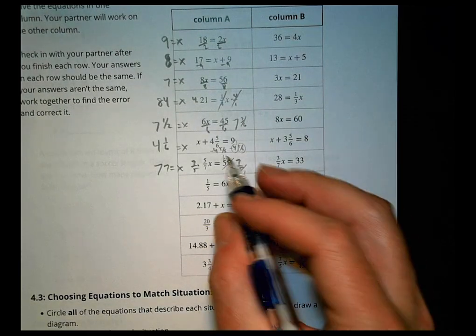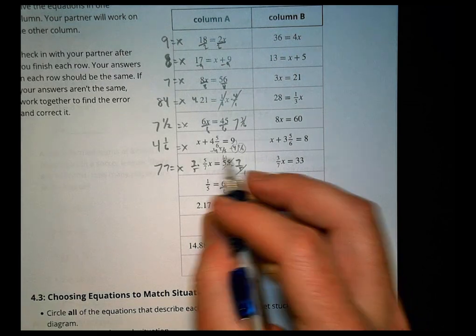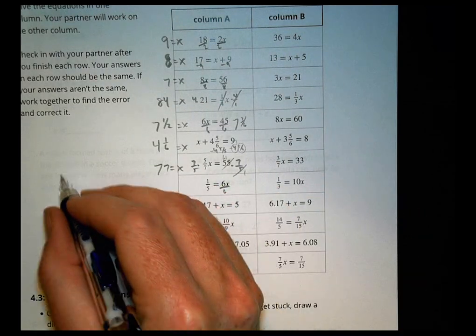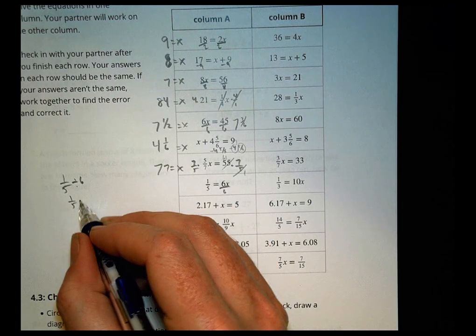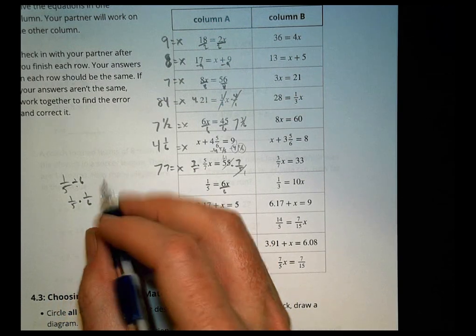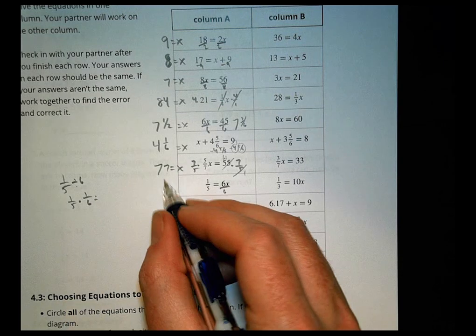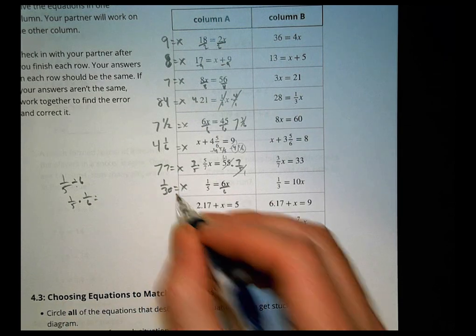For the next one, we're going to divide by 6. So you really have 1 fifth divided by 6. Well, 1 fifth divided by 6 is multiplying by the reciprocal. So it's times 1 sixth. So you really have 1 thirtieth equals x.